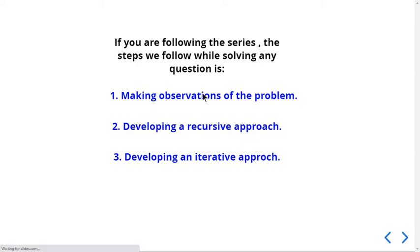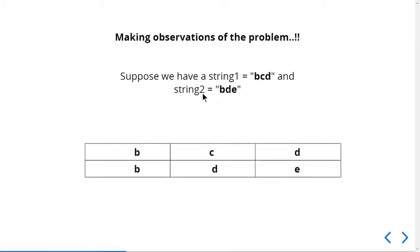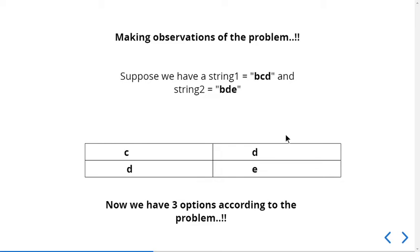For our observation, suppose we have string1 as 'bcd' and string2 as 'bde'. We take a 2D matrix for the two strings. If we have two elements that are the same, our problem reduces — we don't need to replace, insert, or delete. We simply make a recursive call and move ahead. That is our first observation: if characters are the same, there is no cost.